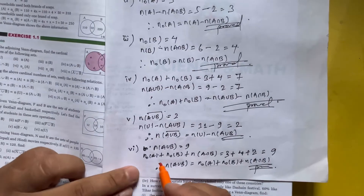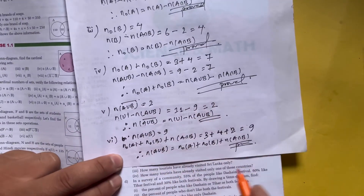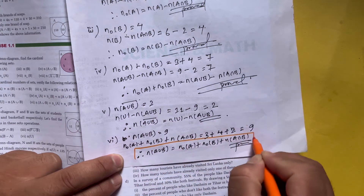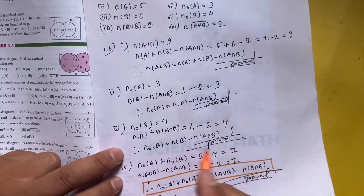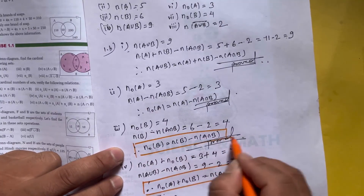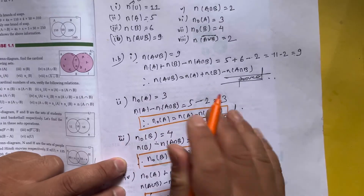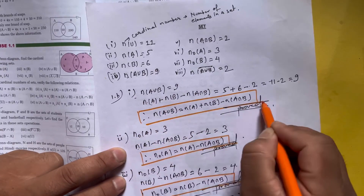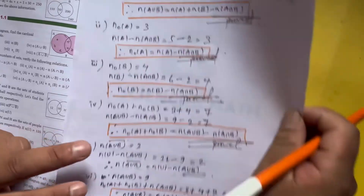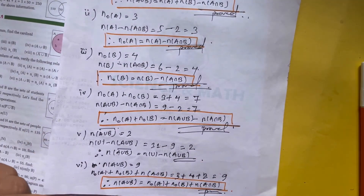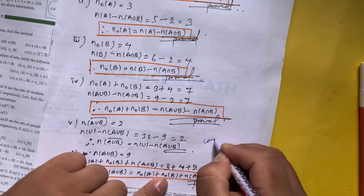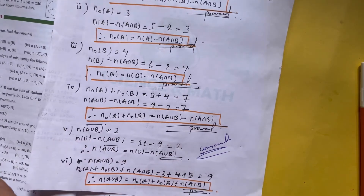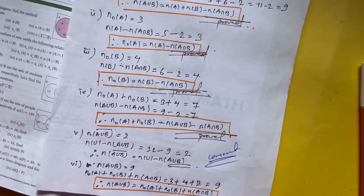All the given relations have been proved. These are the standard formulas used for two sets. If you have any problems or questions, please comment below. Thank you.